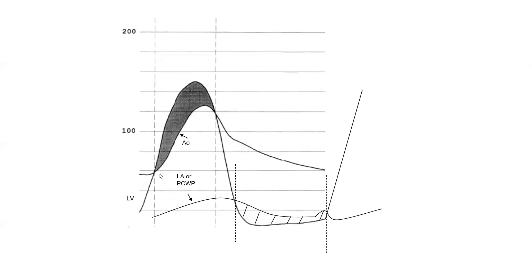I will move to mitral stenosis. The basic recording for mitral stenosis is a simultaneous recording of LA pressure and LV pressure in diastole. When analyzing simultaneous recordings — whether LV-aorta or LV-LA — always look at what is happening in systole and in diastole. Mitral stenosis is assessed in diastole.